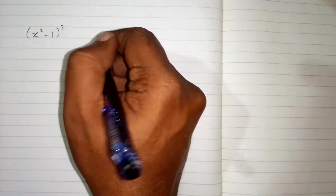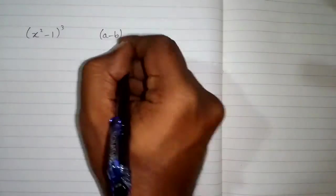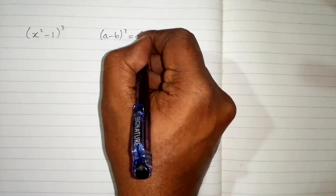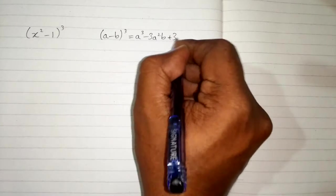In this video we will find the cube of x² - 1. We will use the algebraic identity which is (a - b)³ = a³ - 3a²b + 3ab² - b³.